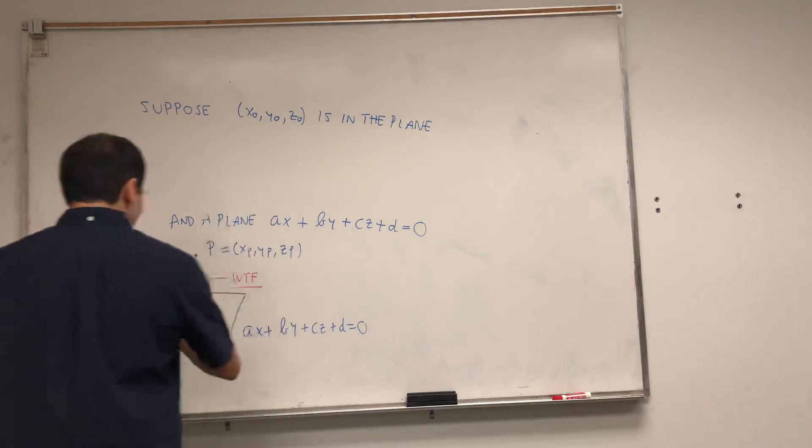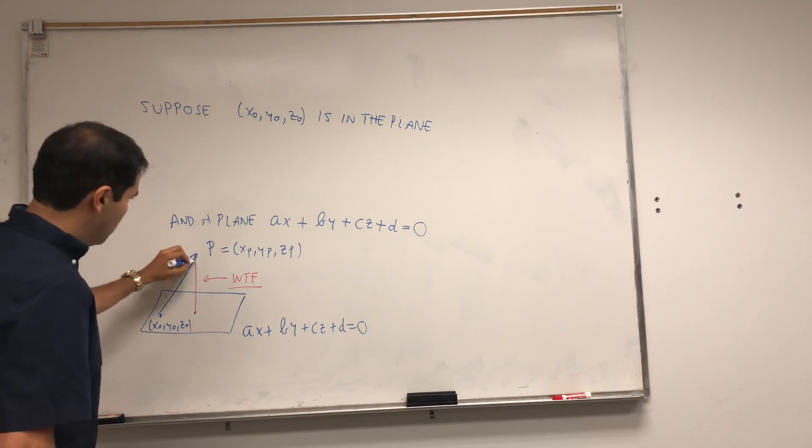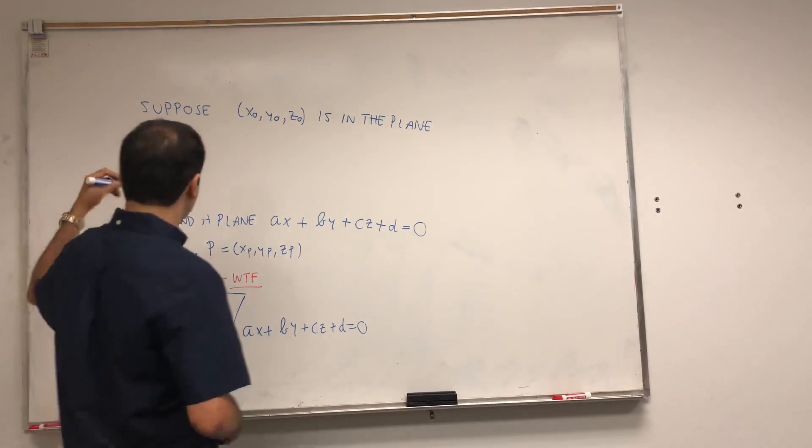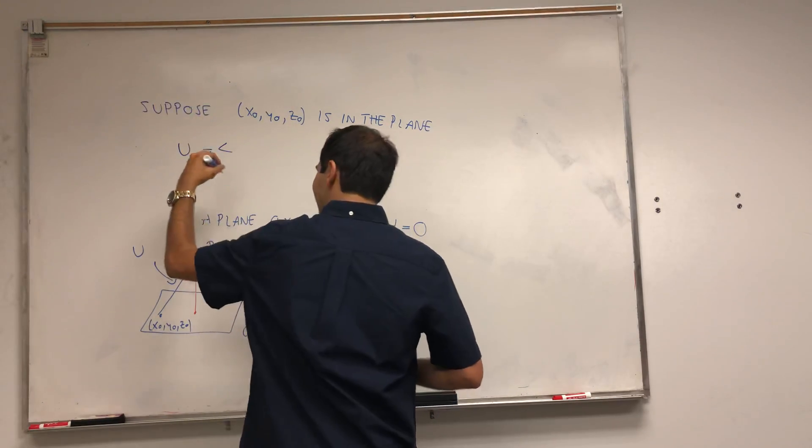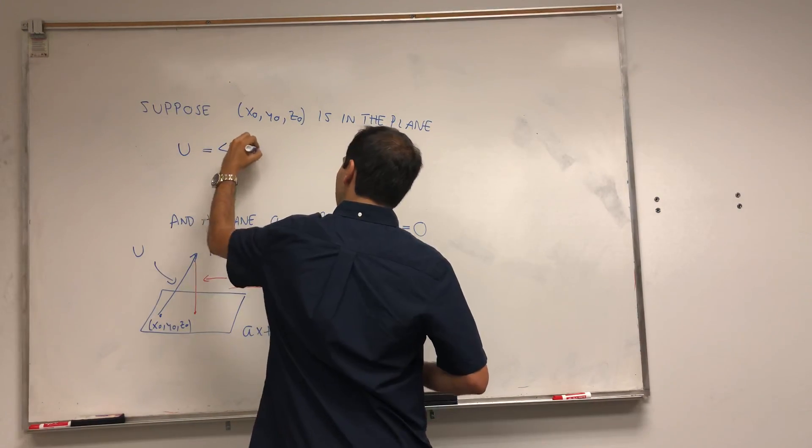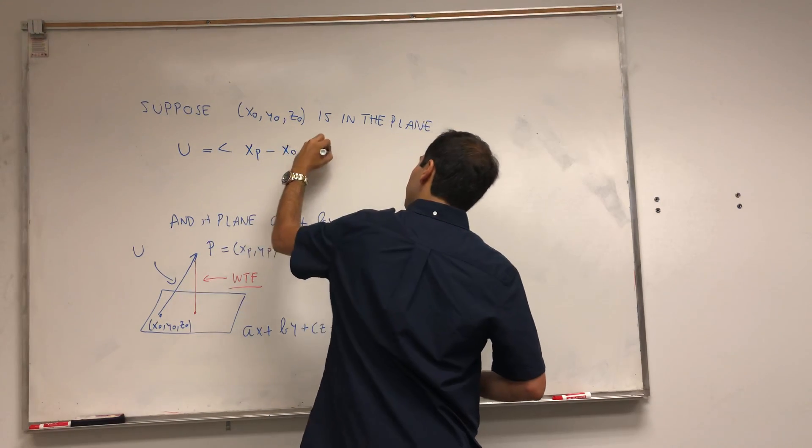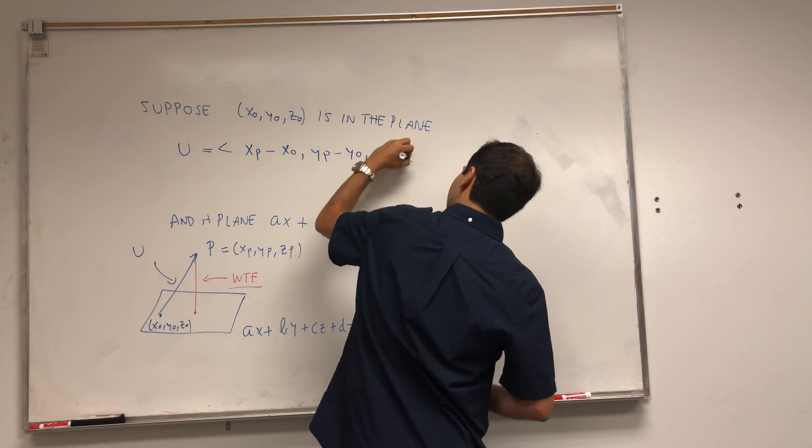First of all, let's consider this vector here. Let's call it U. We can actually calculate this, so using vector notation, U equals (xp - x₀, yp - y₀, zp - z₀).